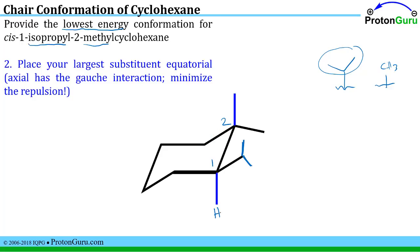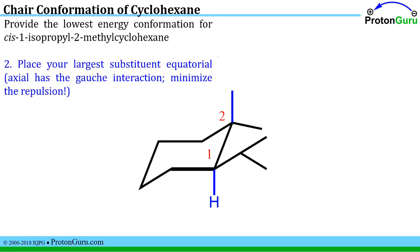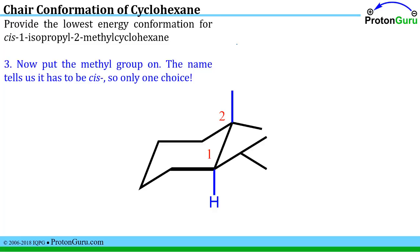So in position one we should have the isopropyl group in the equatorial position and the methyl group will have to go somewhere else. Well once we've placed our larger substituent equatorial to minimize the strain, we don't really have a choice of where to put the methyl group because the methyl group has to go cis to wherever we've just put this isopropyl group.